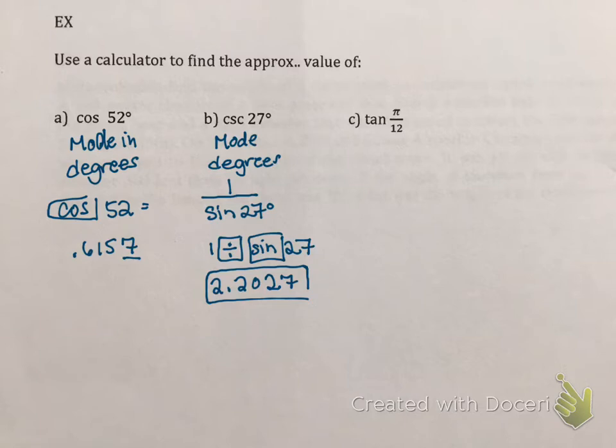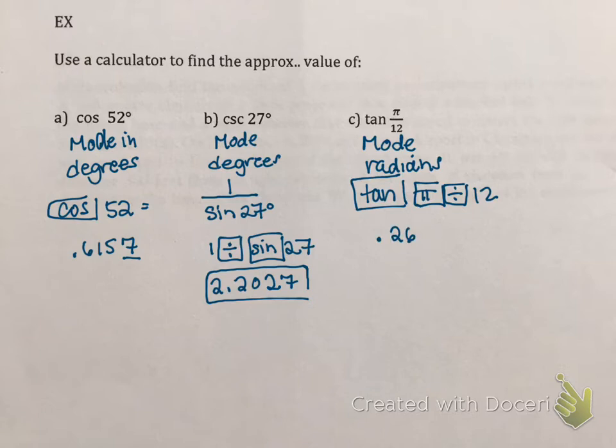Last one, tangent. The mode has to be in radians. Tangent, I have a key for that, so no problem. It's not a reciprocal function. So I'm going to click on the tangent key. I'm going to click on the pi key, divided by 12. So once again, make sure your mode's in radians. I'm going to do that. I'm going to quit out of the menu, and then I'm going to click tangent. I'm going to find my pi key, and then I'm going to divide that by 12, end parentheses. I get 0.2679.